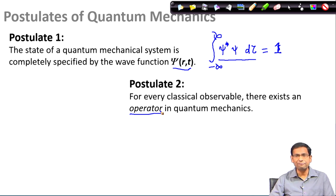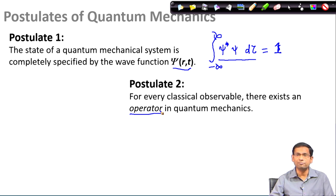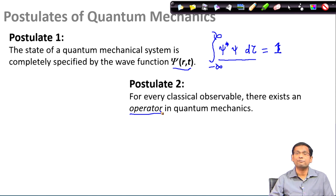We also saw that the same function can become an eigenfunction of two different operators, and that there could be many different functions but only some of them would actually be eigenfunctions of a given operator. Now, if we combine the knowledge from postulate 1 and postulate 2, we can summarize: postulate 1 says psi contains all the information, and postulate 2 says if I want to know any particular information I should bring the corresponding quantum mechanical operator. But together, postulates 1 and 2 do not tell us what the outcome of a measurement would be — that is the purpose that postulate 3 would fulfill.